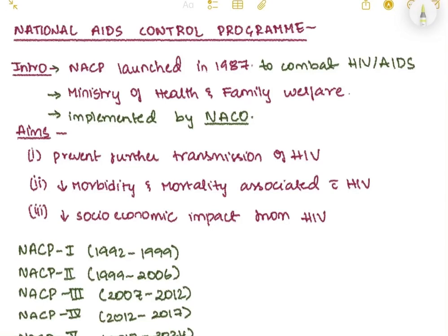Here we'll talk about the National AIDS Control Program or NACP. It was launched in 1987 to combat AIDS and HIV, under the Ministry of Health and Family Welfare, implemented by NACO.